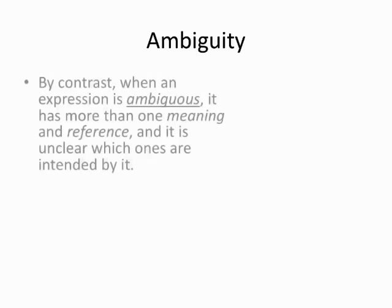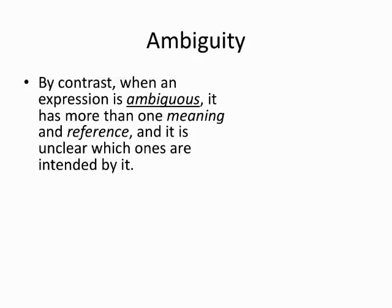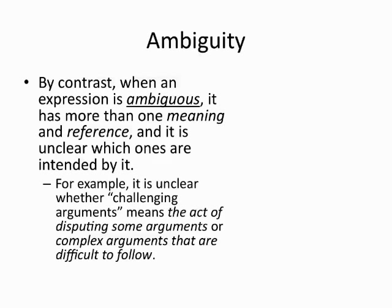Now contrast the notion of vagueness with the concept of ambiguity. When a term is ambiguous, it has more than one meaning and can refer to more than one thing, so we can't decide which meaning or reference it's supposed to have. Incidentally, the etymology — that is to say, the word origins — of ambiguity gives us a strong hint as to its meaning. The prefix 'ambi' means 'two' or 'both,' and ambiguous literally means 'having two meanings.' Here's an example: if I use the phrase 'challenging arguments,' it's unclear whether I'm referring to arguments that are difficult — hard to comprehend — or whether I'm referring to arguments used to dispute someone else's claims.